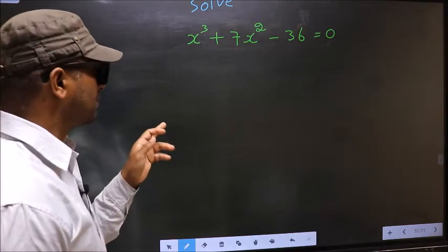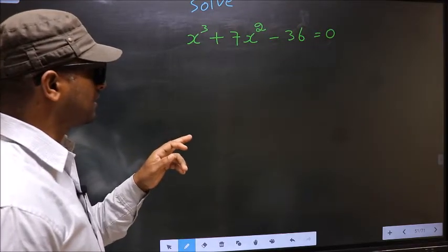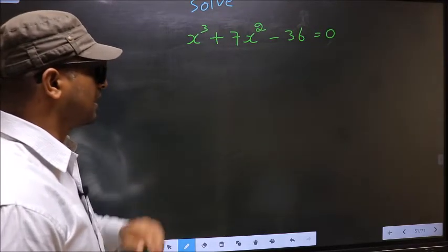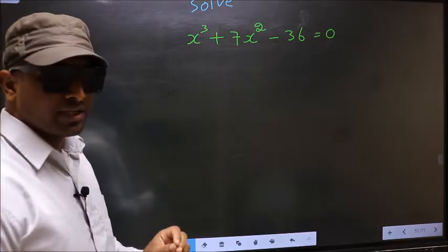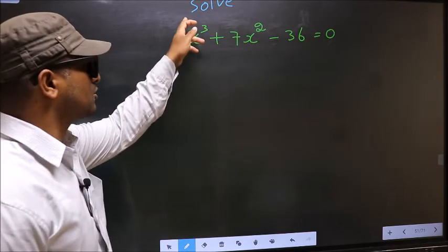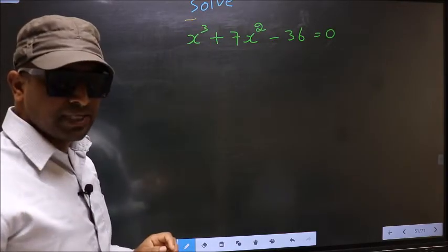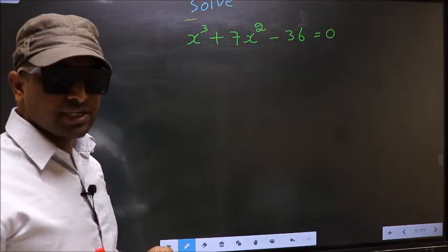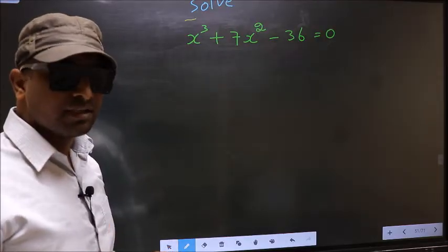Solve x cube plus 7x square minus 36 equal to 0. Here they told us to solve, which means we should get the values of x.